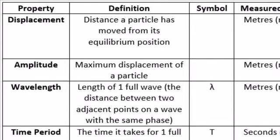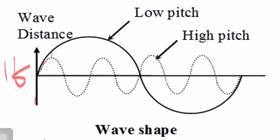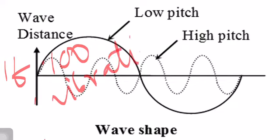What is frequency? The number of oscillations or vibrations made by a vibrating body in one second is known as frequency. It also measures the pitch of the sound. The SI unit of frequency is hertz, represented as capital H and small z (Hz).